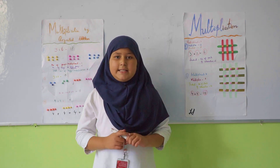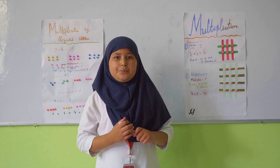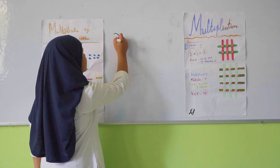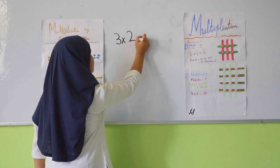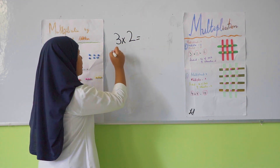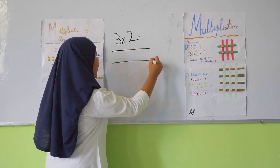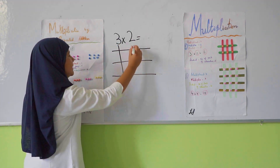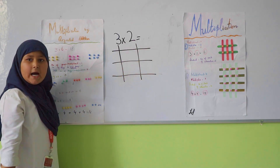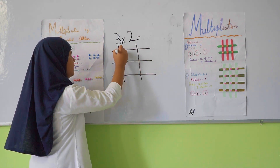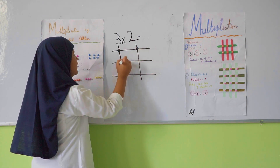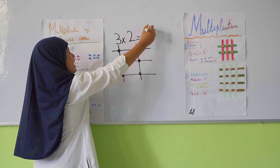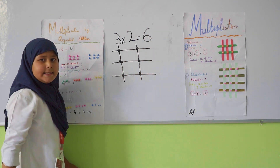Now the easiest way of doing multiplication. Here is a question: 3 multiply by 2. First we will draw 3 horizontal lines and then 2 vertical lines. Now we will count the points of intersection: 1, 2, 3, 4, 5 and 6. So our product is 6.